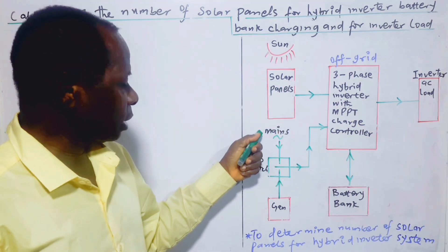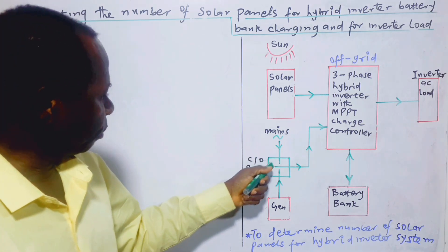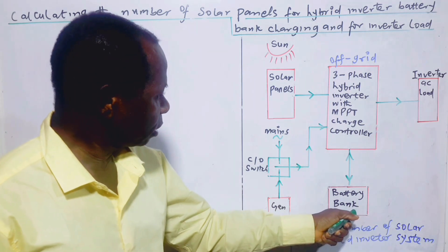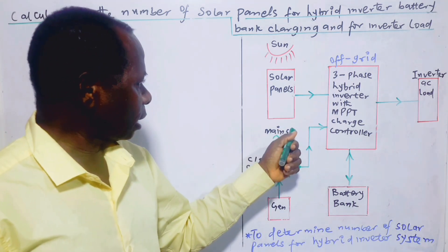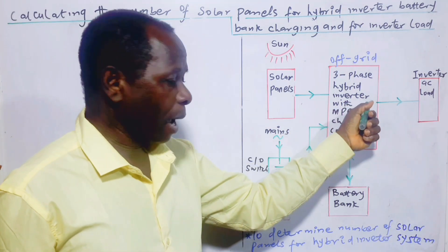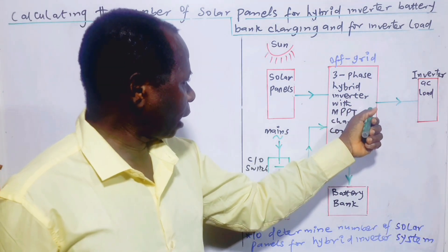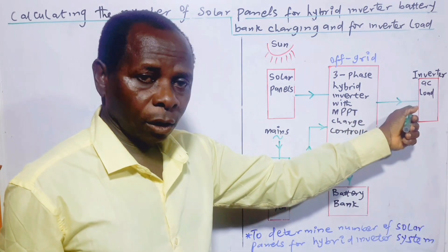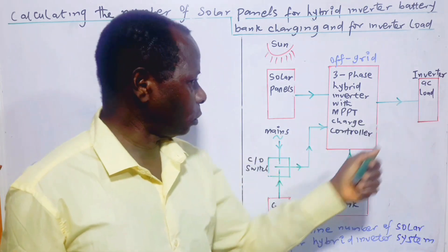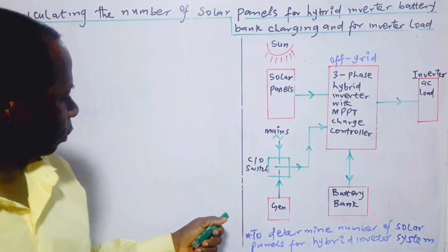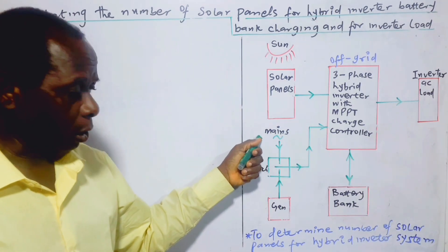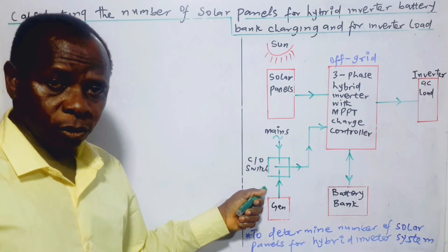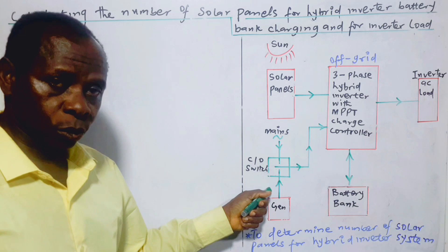If there is mains supply, the mains voltage will charge the battery, and at the same time it will bypass the inverter function and supply AC voltage directly to the AC load. But in a situation where the mains voltage is not available and the generator is also not being used,